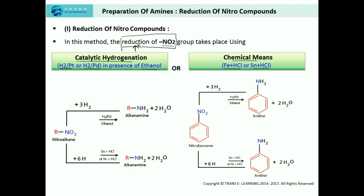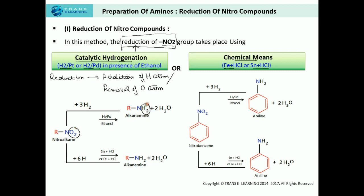What is meant by reduction? Reduction is the addition of hydrogen atoms or the removal of oxygen atoms. In this reaction, there is removal of oxygen and addition of hydrogen. Note: I am telling you the tricks to form the products from the reactants and reagents given; to understand the full mechanism, please watch the other video. So you can see we are adding hydrogen to the nitroalkane, and there is replacement of oxygen by hydrogen, giving an alkyl amine, using H₂/Pt in ethanol, or Sn + HCl, or Fe + HCl.